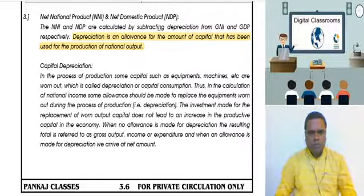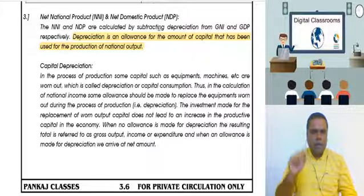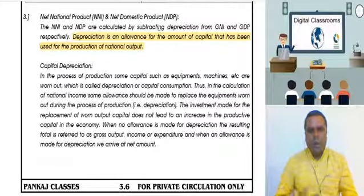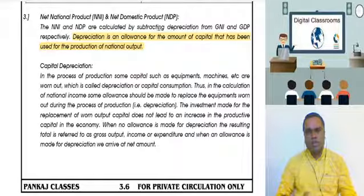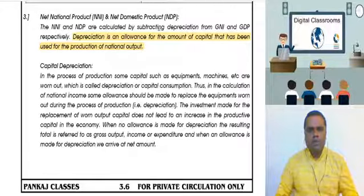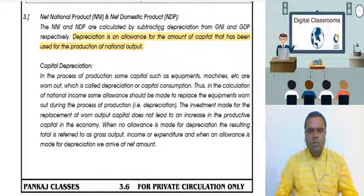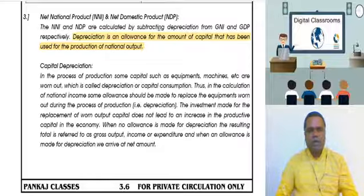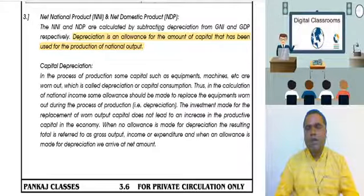Remember: to convert gross to net, you need to minus depreciation. Because when you use fixed equipment and machines in the process of production, the wear and tear is known as depreciation. If you include the full value of machines without accounting for this, you will get a wrong figure of national income. So we make an allowance for depreciation — gross minus depreciation gives a net amount.